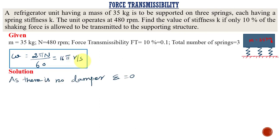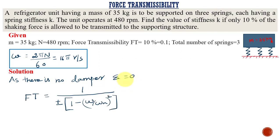Now we are going to solve the problem. This problem has no damper, so the damping ratio η becomes 0. For this case, the force transmissibility formula is 1 divided by the absolute value of (1 minus (ω/ωₙ)²). This is the formula for force transmissibility when there is no damper.